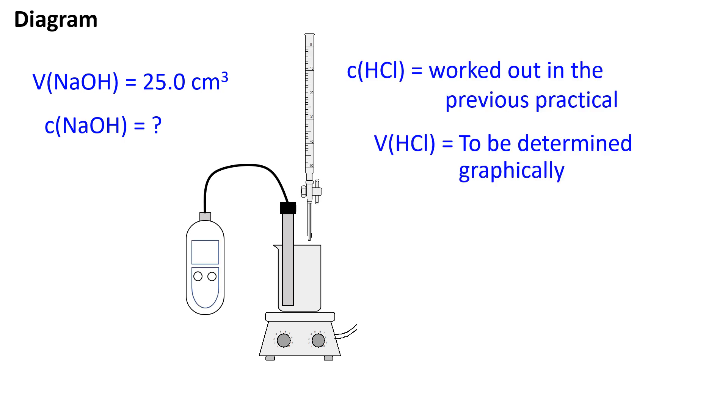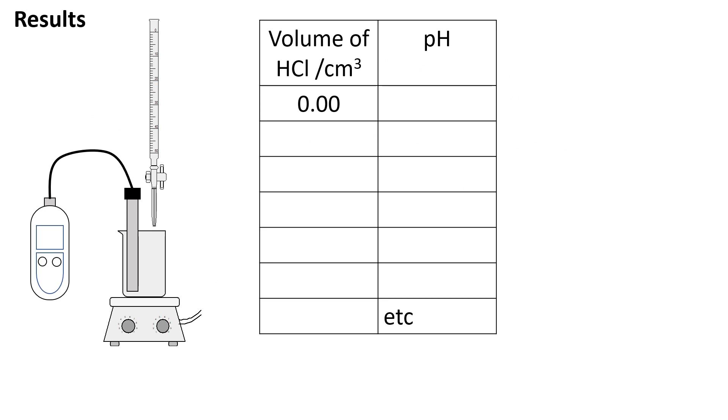A burette is rinsed and filled with the hydrochloric acid solution. The concentration of this solution was determined in the previous practical. The initial pH is read and recorded to two decimal places. There is only sodium hydroxide in the beaker at the start of the reaction, so the pH will be greater than 12.